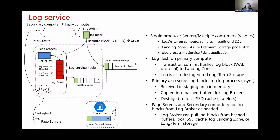When we need that log, page servers and secondary compute replicas continuously talk to Log Service to get new log blocks. Not every log block has to be sent everywhere — because they're hashed by page ID, each page server can only request log blocks for its own range of pages, and the same applies to replicas — that's an optimization. Each log block can be served from memory (from the log broker), or if not found in memory, from local SSD cache, or from either the landing zone or long-term storage.